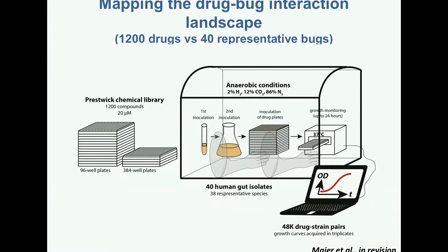Moving on from the resource to looking into the drug-bug interaction landscape. We have screened 1,200 different drugs — all FDA-approved compounds from the Prestwick library — against 40 different representative bugs, a subset of the 100 bugs we have characterized. In all, we tested 48,000 drug-strain pairs, done in biological triplicates under anaerobic conditions. Basically, you add different drugs to different bacteria and record the growth curves.